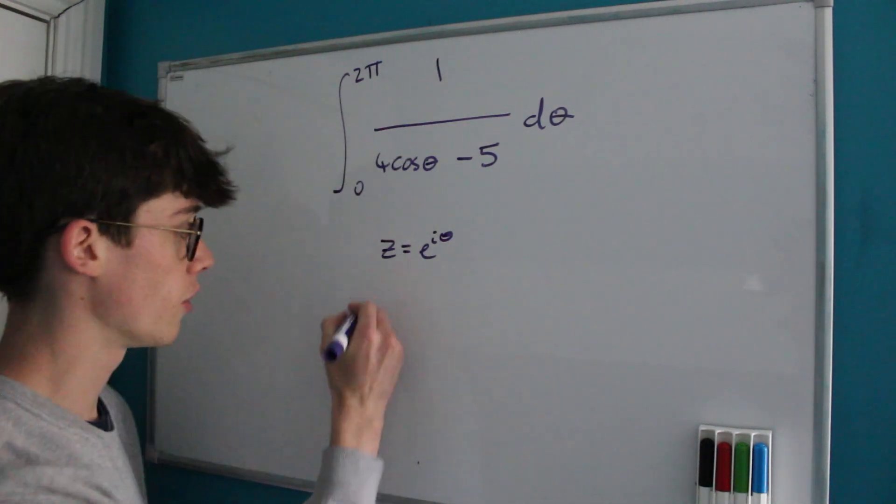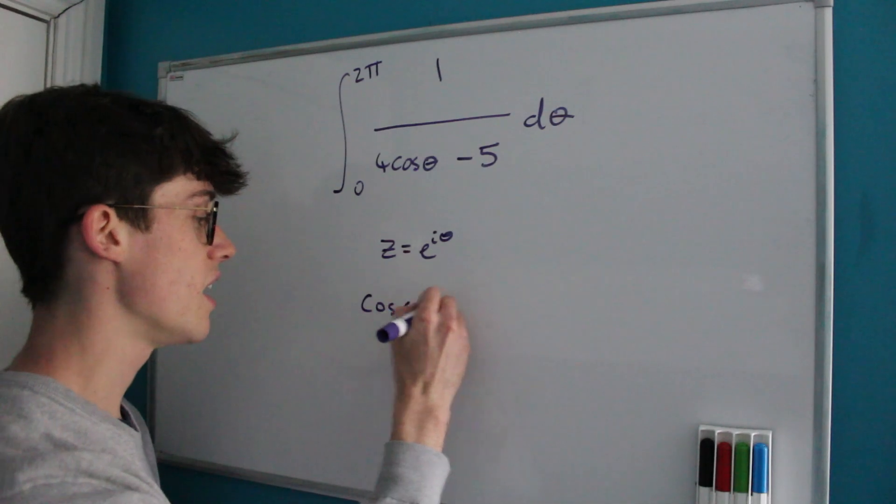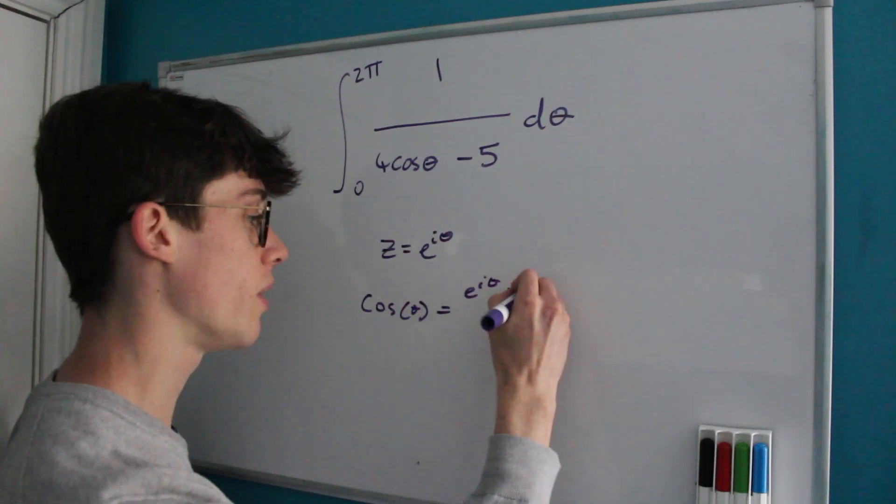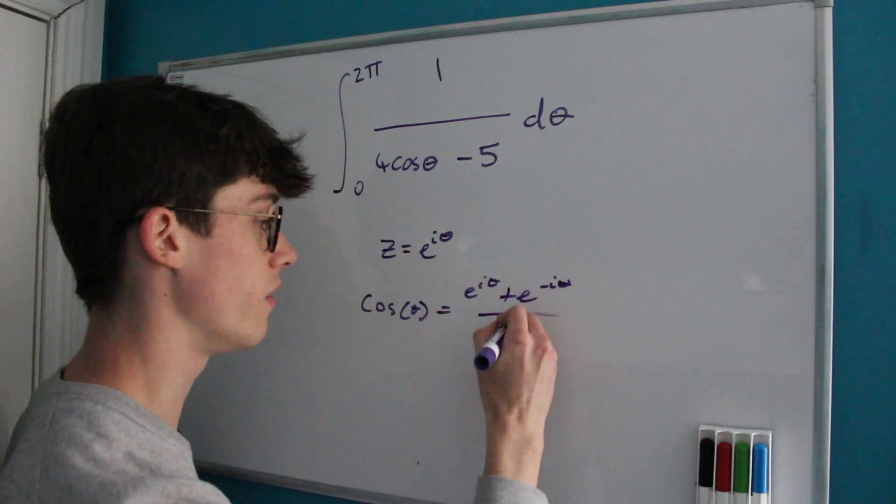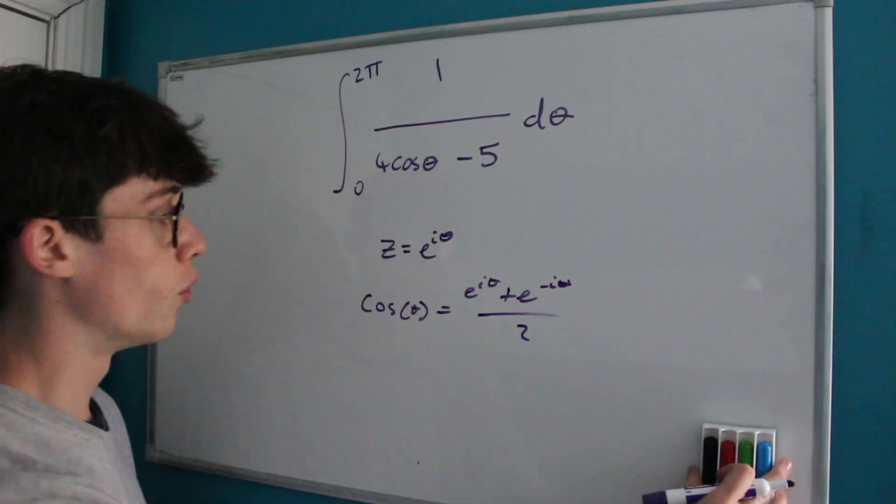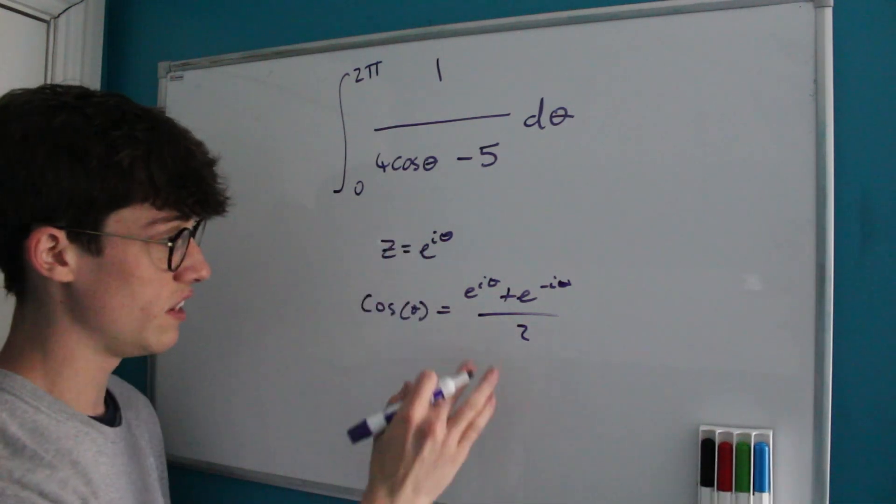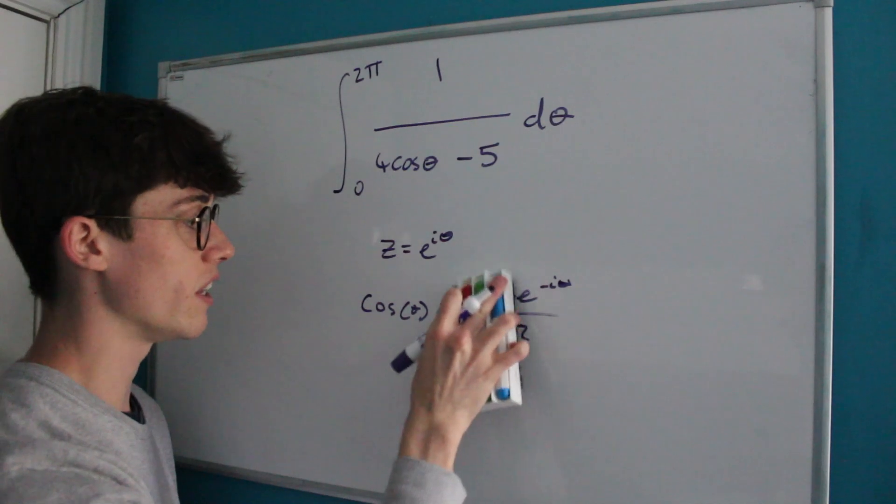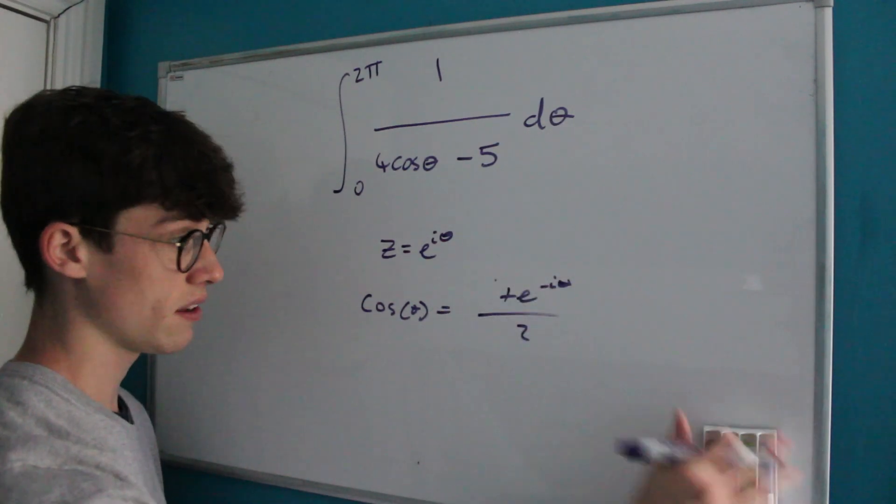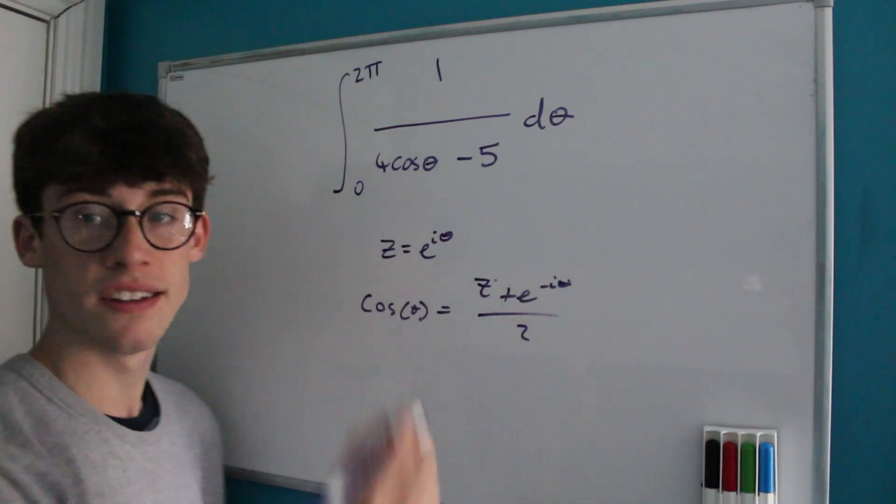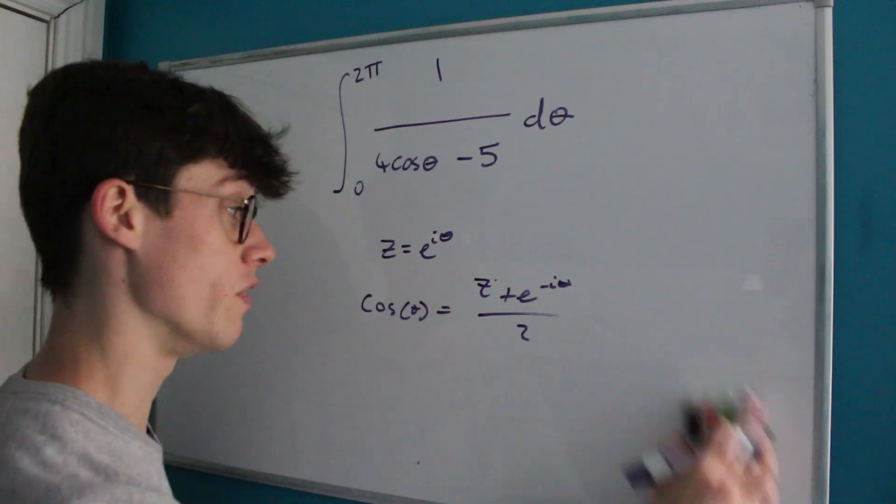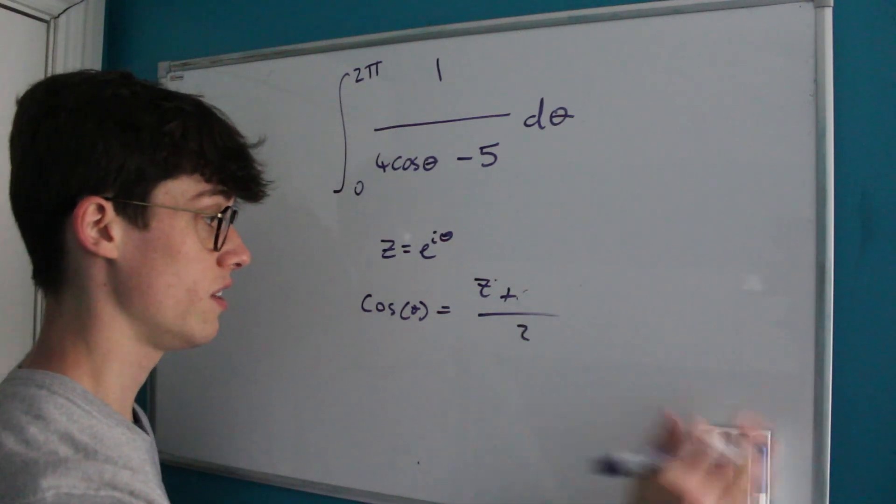And how can we then write our cosine in terms of this? Well, we've got to think of the complex definition of cosine. Cosine θ equals e to the iθ plus e to the negative iθ divided by 2. And of course given that e to the iθ is z, we can rewrite this as z plus z to the negative 1, also known as 1 over z, all divided by 2.